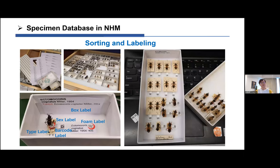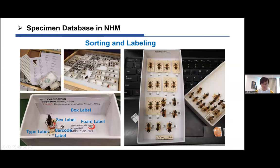Once a specimen is confirmed as a type specimen, it should be placed in a separate box. The next step is labeling — there are five different kinds of labels. First, a box label inserted on the back side of the box, and a foam label pinned on the foam, showing the original name, current name, and type status. For the specimen itself, there is a type label indicating holotype, paratype, syntype, and so on, a sex label, and a barcode label. Each specimen in the museum has its own unique barcode to locate it in the database.